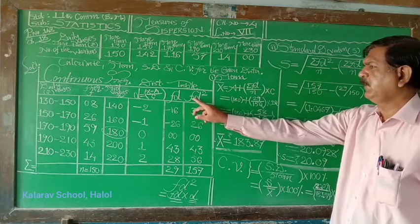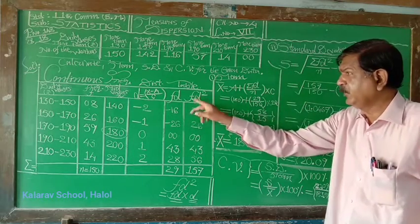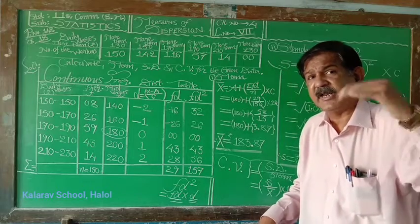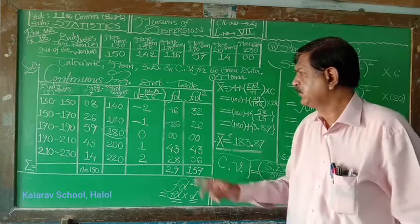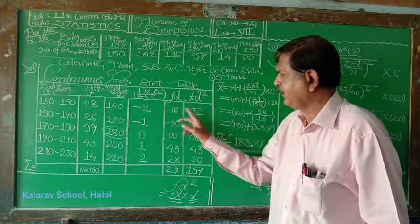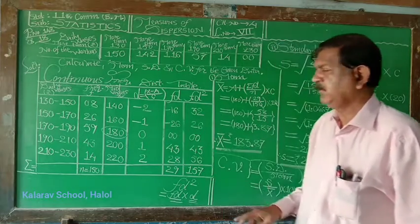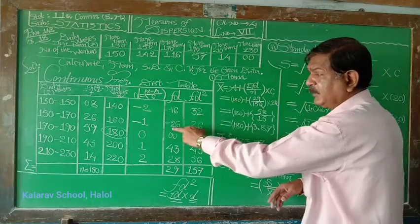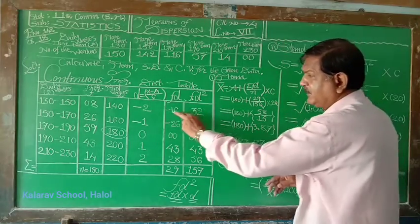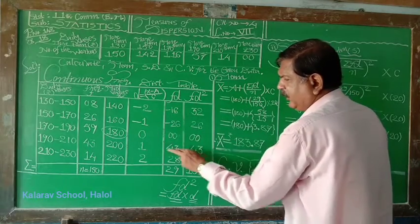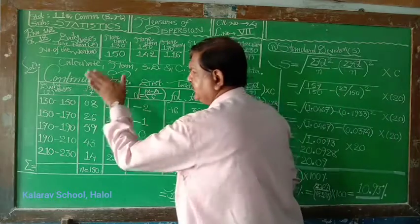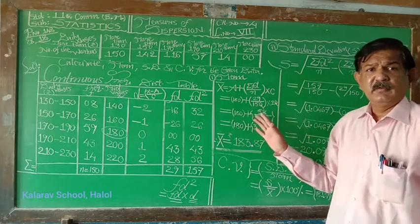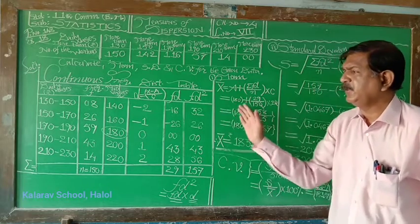And the last column, f multiply by d square, not d whole square but f into d square. f into d square means fd multiply by d. This point we have seen in the last lecture also in the case of discrete type of frequency distribution. Then minus 16 into minus 2, 32. Minus 26 into minus 1, 26. 0. 43. 28 into 2, 56. After completing this, make the totals, total of frequency, total of fd square.